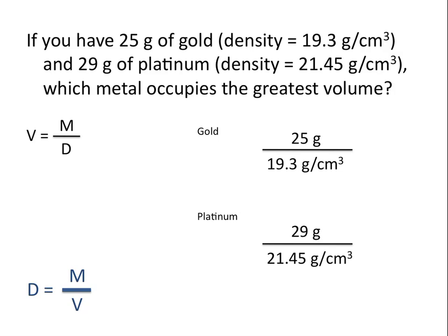Because we have units of grams on the top and grams on the bottom, that allows us to cancel out the units of grams. So the answers we calculate will be given in centimeters cubed. When we put these values into our calculator, we can see that the gold will have a volume of 1.3 centimeters cubed, while the platinum will have a volume of 1.4 centimeters cubed, which means that the sample of platinum in this problem would occupy the greatest volume.